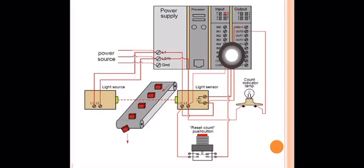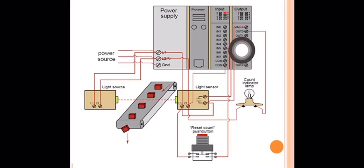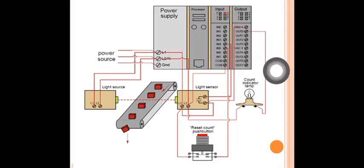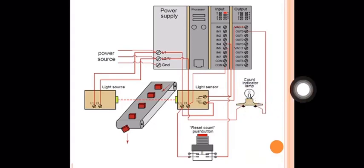So when we want to produce 100 products, we set the counter limit to 100. When the current count reaches 100, the output is set. The output is connected to a counting indicator lamp. So when the indicator lamp activates, we know that 100 products have been produced.